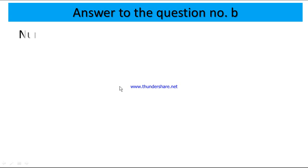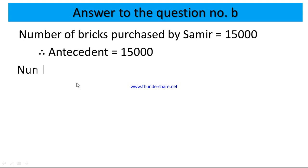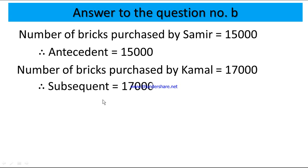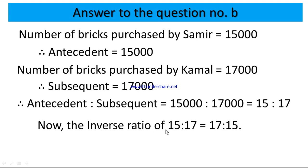Answer to question B: The number of bricks purchased by Samir is 15,000, therefore the antecedent is 15,000. The number of bricks purchased by Kamal is 17,000, therefore the subsequent is 17,000. Therefore, antecedent to subsequent = 15,000 : 17,000 = 15 : 17, dividing both by 1,000. The inverse ratio of 15 : 17 is 17 : 15.